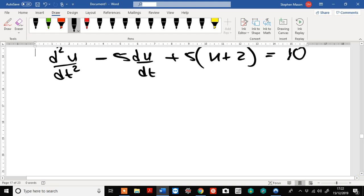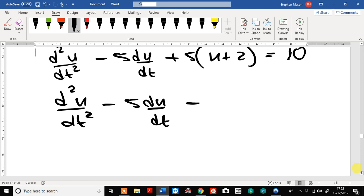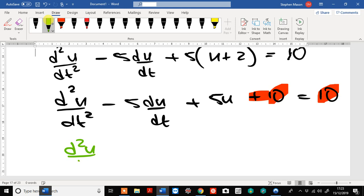This simplifies: d squared u by dt squared minus 5 du by dt plus 5u plus 10 equals 10. And as you can see, the 10s just cancel out. So, we're left with d squared u by dt squared minus 5du by dt plus 5u equals 0.